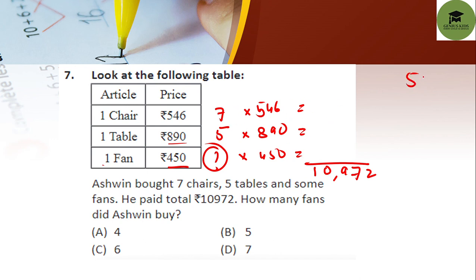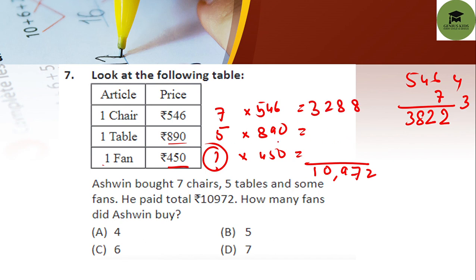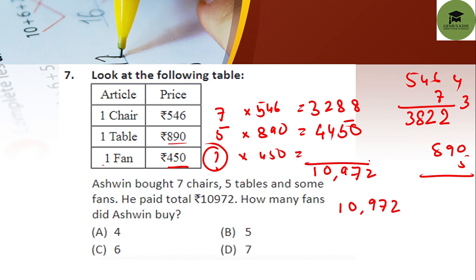To solve this, first find the cost of 7 chairs: 546 × 7 = 3,822. Then find the cost of 5 tables: 890 × 5 = 4,450. The summation of chairs and tables cost is 3,822 + 4,450 = 8,272.